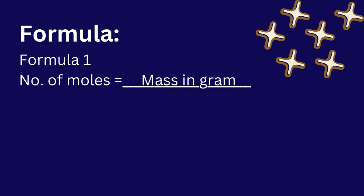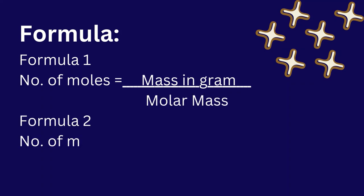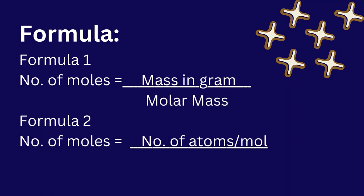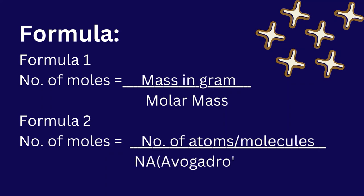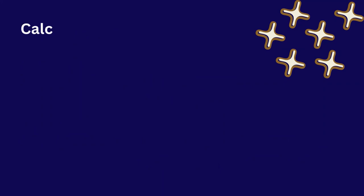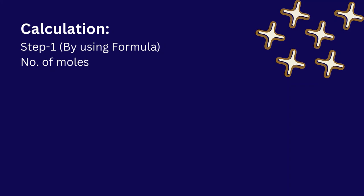Formula 1: number of moles equals mass in grams divided by molar mass. Formula 2: number of moles equals number of atoms or molecules divided by Avogadro's number.